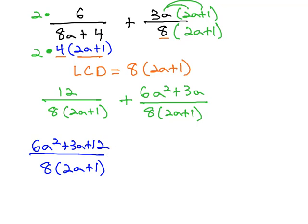Before we call this our final answer, we want to check to see if it reduces. The numerator we see has a common factor of 3, leaving behind 2a squared, plus a, plus 4, over our denominator of 8, times 2a plus 1.